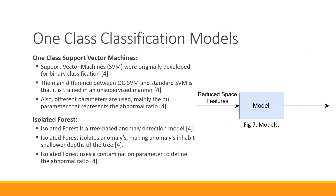For one class classification methods we used two popular ones. The first is One-Class Support Vector Machines, based on the original SVM model used for binary classification. The key difference is it's trained in an unsupervised manner and has a new parameter called nu, which represents the ratio of abnormal data. We also used Isolation Forest, which is based on decision trees and performs anomaly detection by making splits that identify anomalies at a shallower tree depth. It has a similar parameter called contamination — the ratio of abnormal samples.